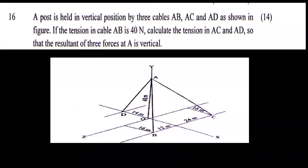A force is held in vertical position by three cables AB, AC, and AD as shown in the figure. The tension in cable AB is 40 N. Calculate the tension in AC and AD so that the resultant of the three forces at A is vertical.